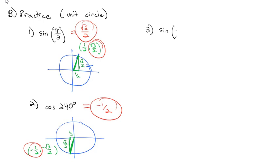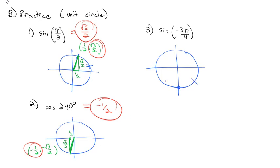Find the sine of -3π/4. Counting -3π/4 means going backwards 3 quarters, landing in the third quadrant. This divides the circle right on a diagonal, so both distances are equal at √2/2. Going backwards and down gives coordinates (-√2/2, -√2/2). Sine is the y-coordinate, so the sine of -3π/4 is -√2/2.